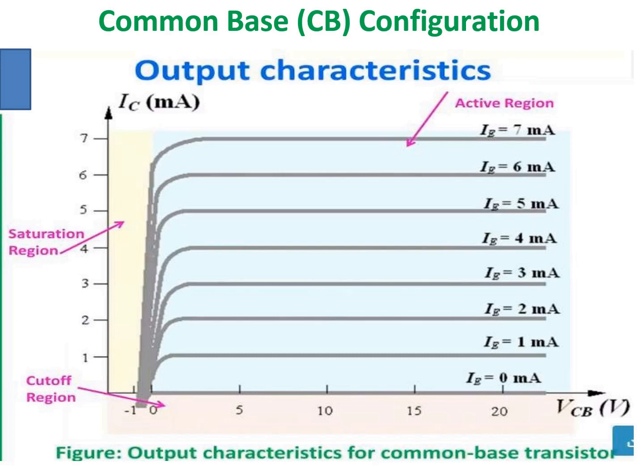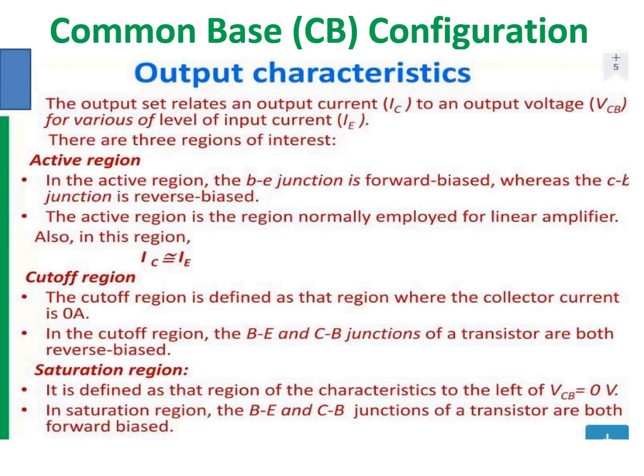This is the output characteristics of the common base configuration. In the active region, the base-emitter junction is forward biased and the collector-base junction is reverse biased. In the cutoff region, both the base-emitter and collector-base junctions are reverse biased. In the saturation region, both junctions are forward biased. The transistor can be used as an amplifier in the active region.